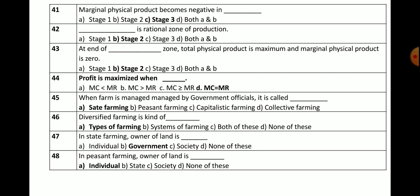Question number 44: Profit is maximized when — option A, marginal cost is less than marginal revenue; B, MC is greater than MR; C, MC is greater than or equal to MR; D, MC is equal to MR. The correct answer is D — profit is maximized when MC equals MR.